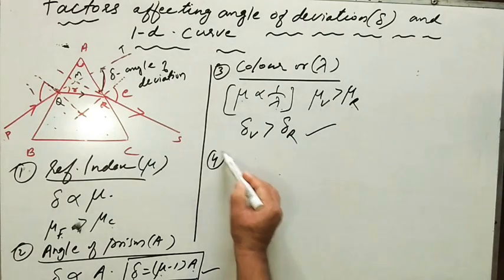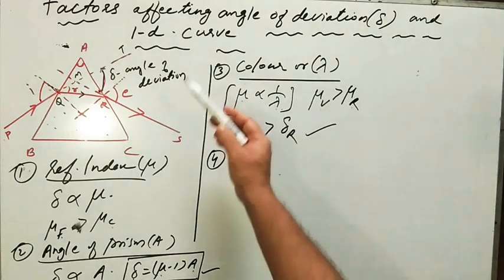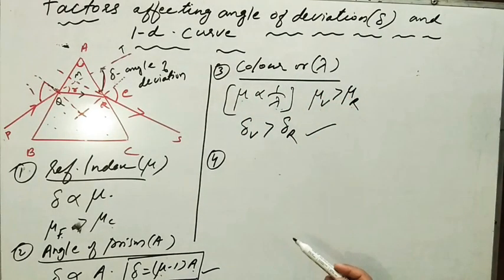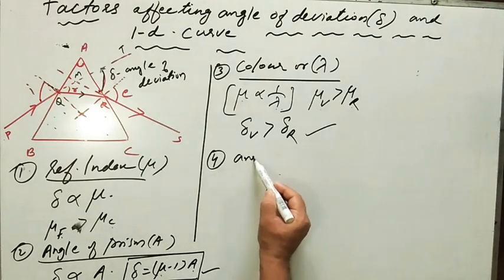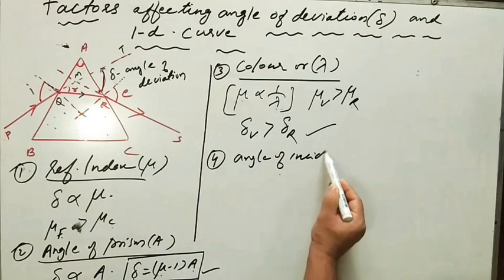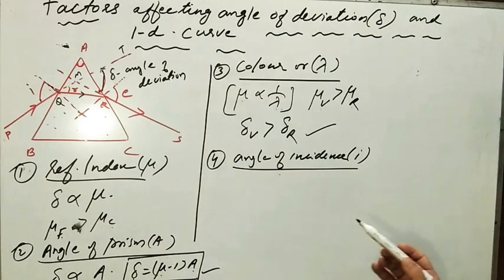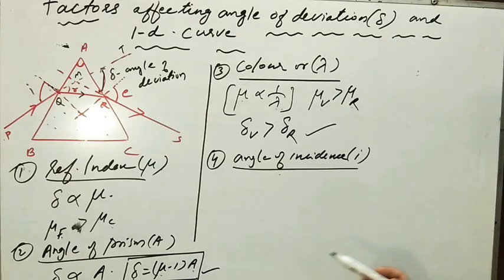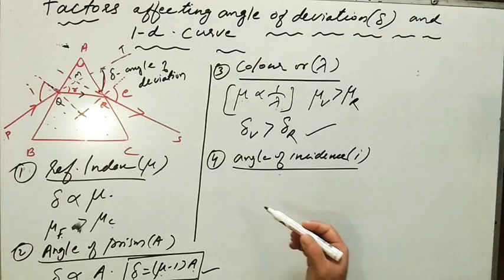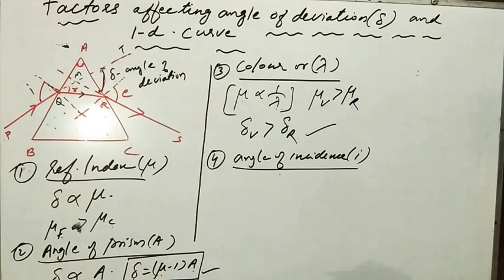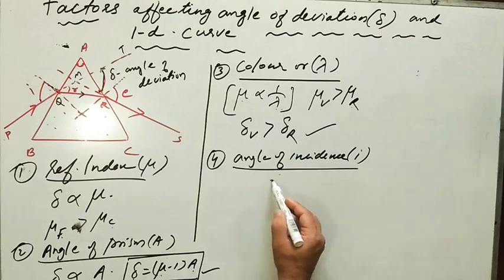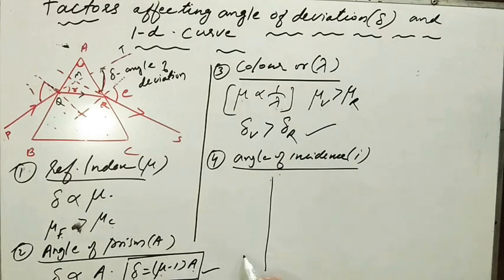The fourth factor on which the angle of deviation delta depends is the angle of incidence. Let us study how the angle of incidence affects the angle of deviation. It is experimentally observed that as the angle of incidence increases, the angle of deviation first decreases, and then, on further increasing the angle of incidence, the angle of deviation begins to increase. Let us plot this in an ID curve, or i-delta curve.